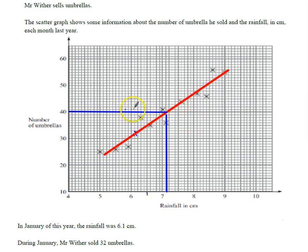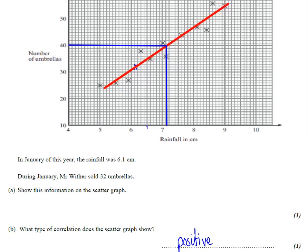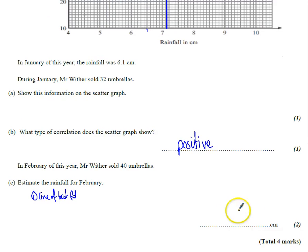So a good way to do this, use your line of best fit, go across, then go straight down, and we can see that we reckon sold 40 umbrellas is about 7.1 centimeters. You'll have a little bit of leeway either way on that, depending on where you've drawn the line of best fit.